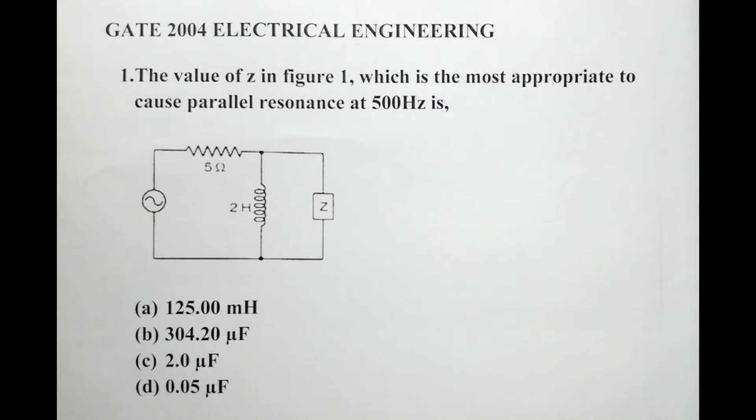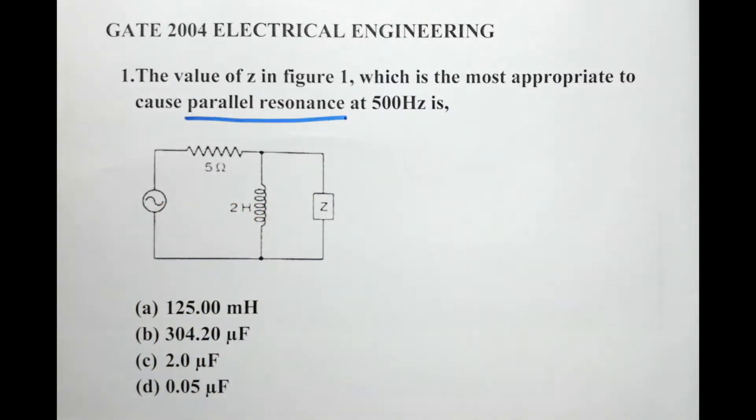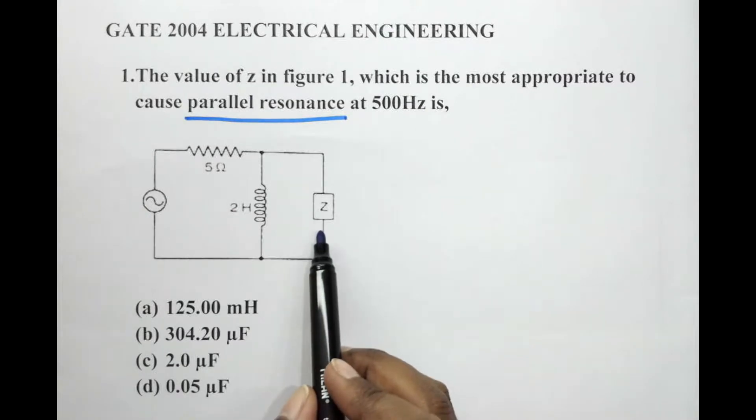So in this problem we are supposed to figure out the element Z, whether it is an inductor or a capacitor. The first thing we will have to note is that the question says parallel resonance. Now in this case and in this figure you will notice that the element Z is in parallel with the inductor.